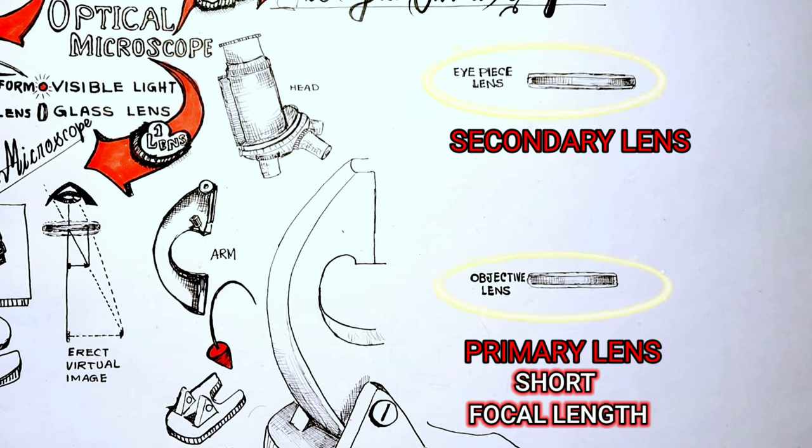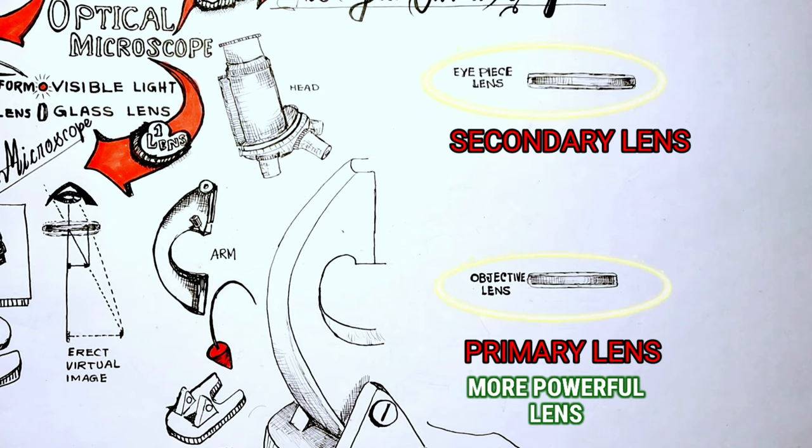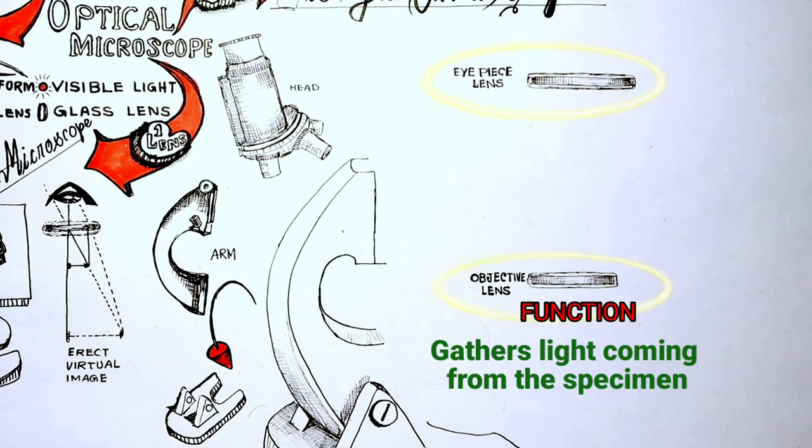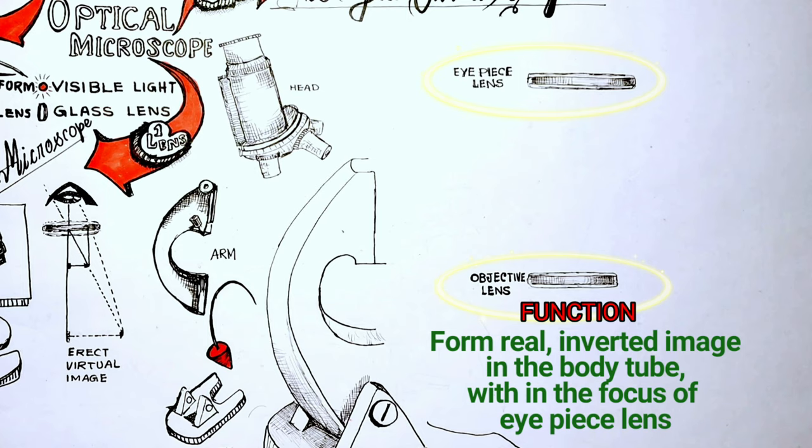Objective lens has a short focal length than the eyepiece lens usually below 1cm. As in case of lenses you know that less is the focal length more is the magnification power. In that sense objective lens is more powerful lens than the eyepiece lens. The function of the objective lens is they gather light coming from the specimen and form a real inverted image within the body tube.